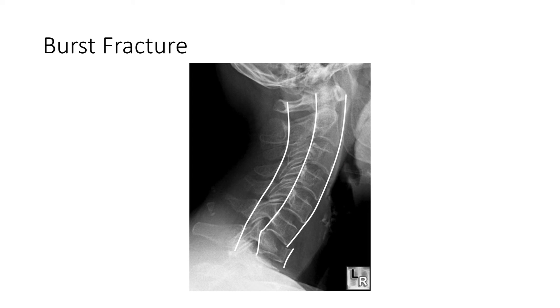Burst fractures are unstable fractures of C3 to C7 caused by compression. There may be trauma to the spinal cord due to displacement of posterior fragments.